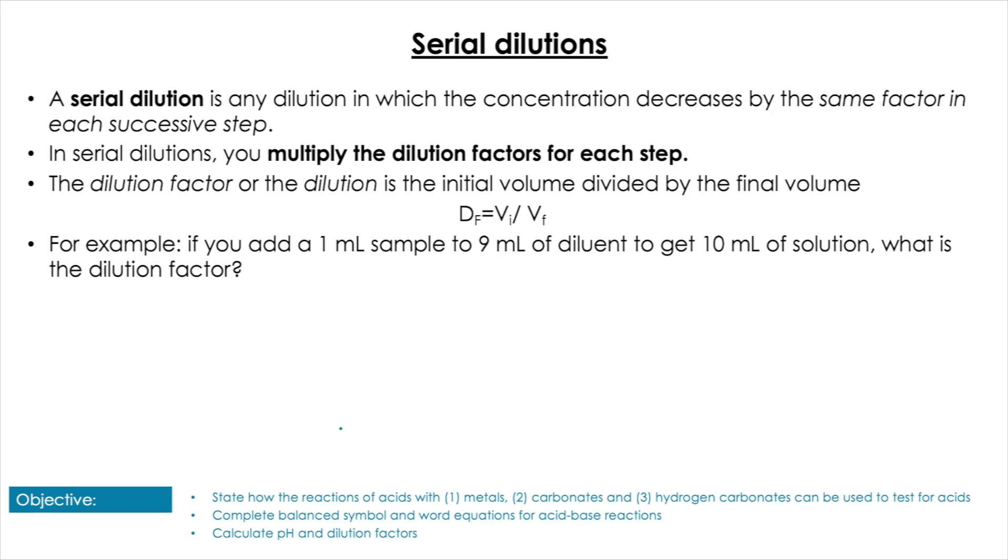So let's have a look at an example here. I take one mil of my sample, so that's my initial, so I'm going to do 1 divided by the new total, so that's going to be 1 plus 9, so I'm going to have 1 divided by 10, which equals a dilution factor of 1 to 10.